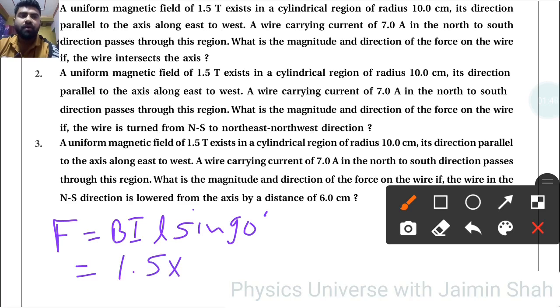So B is 1.5 into I is 7, L is 2R so 0.2 into 1, so answer will come 2.1 Newton again. See, direction is not important but angle is important. And now third question.